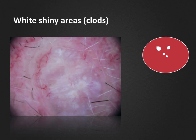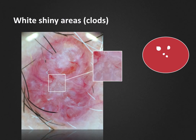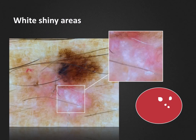In this image we see bright shiny white clods or structureless areas in combination with typical branched vessels. Both findings point us to the diagnosis of a basal cell carcinoma. Here is another BCC with branched vessels in combination with multiple white shiny areas or clods. Although more common in basal cell carcinomas, white shiny areas may also be seen in other lesions including melanoma, as seen here.